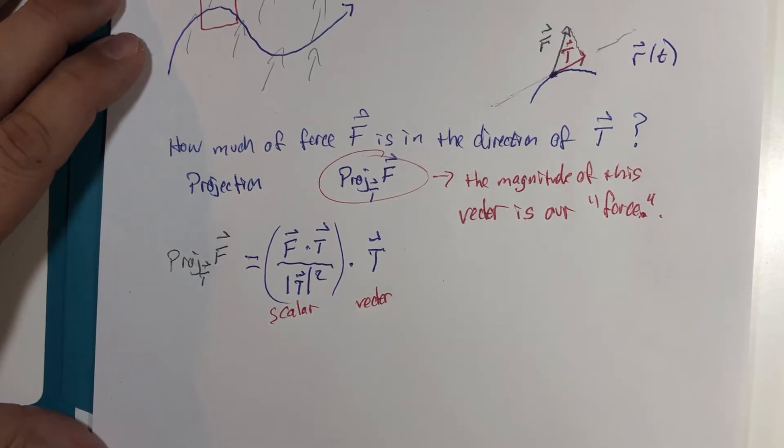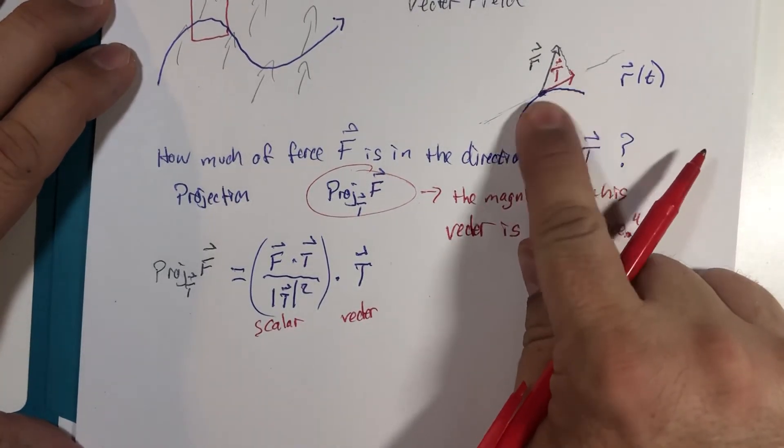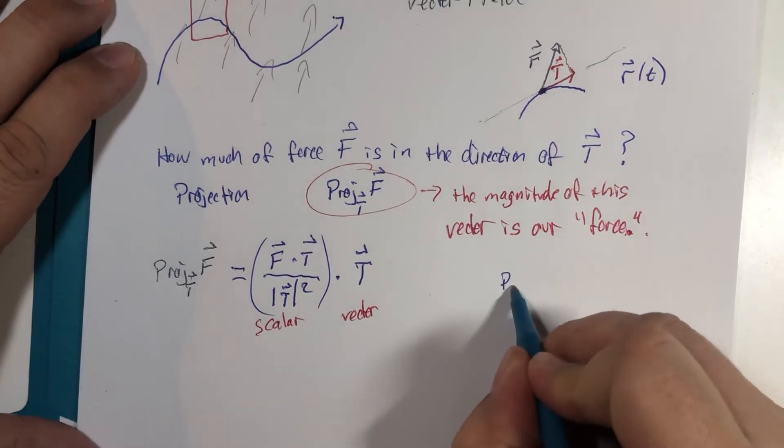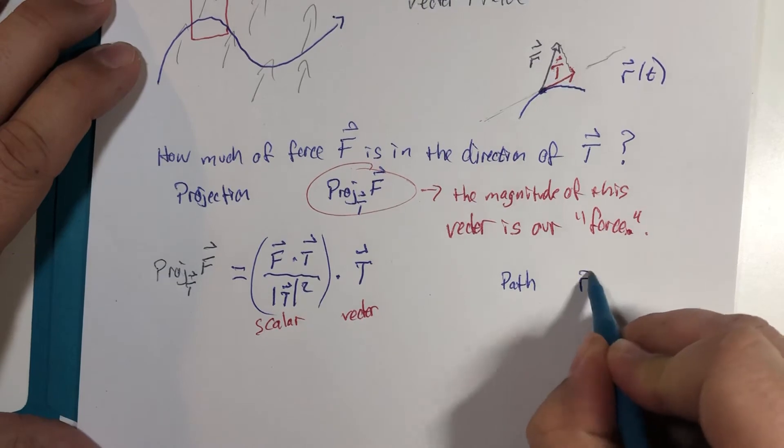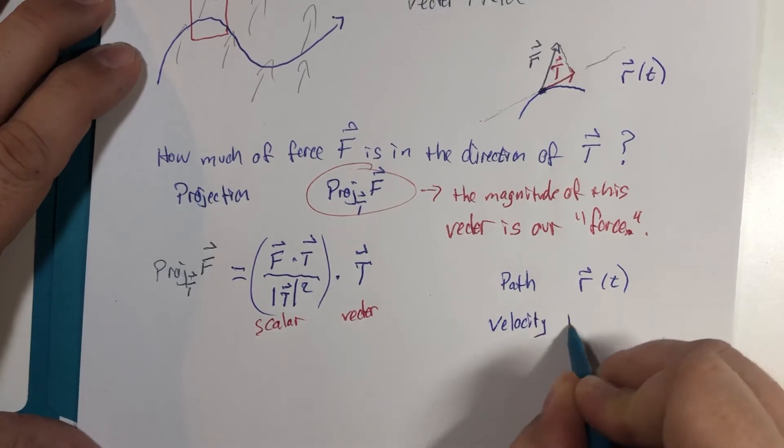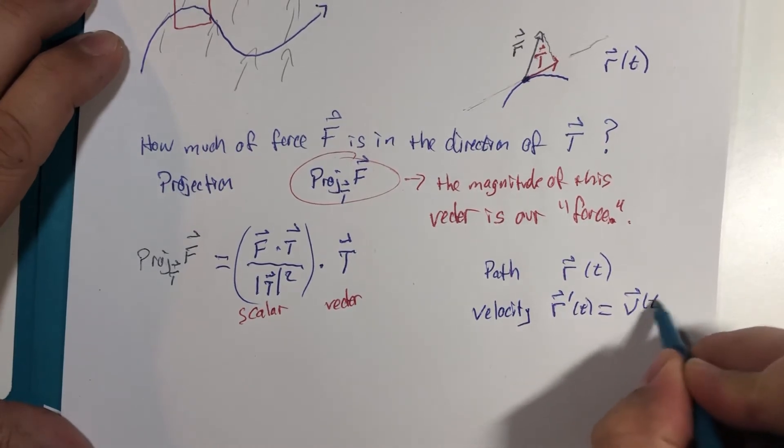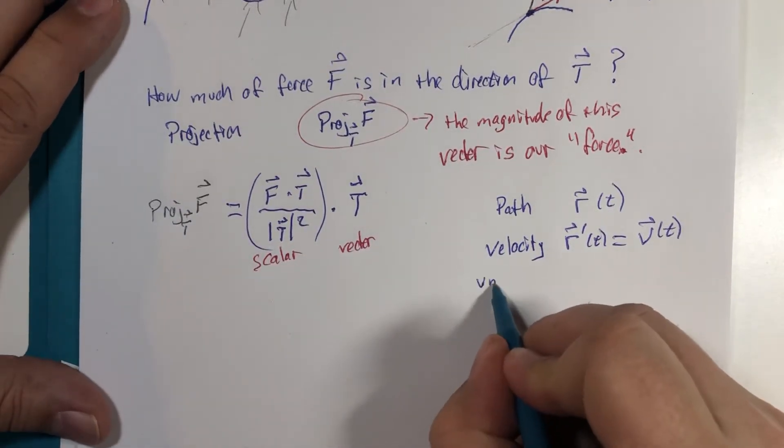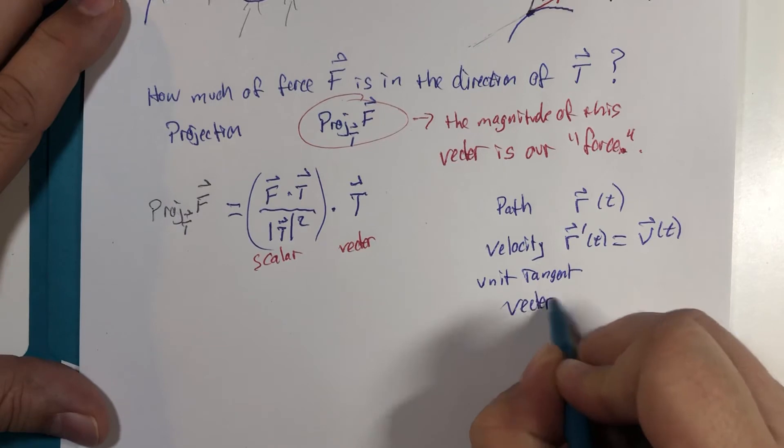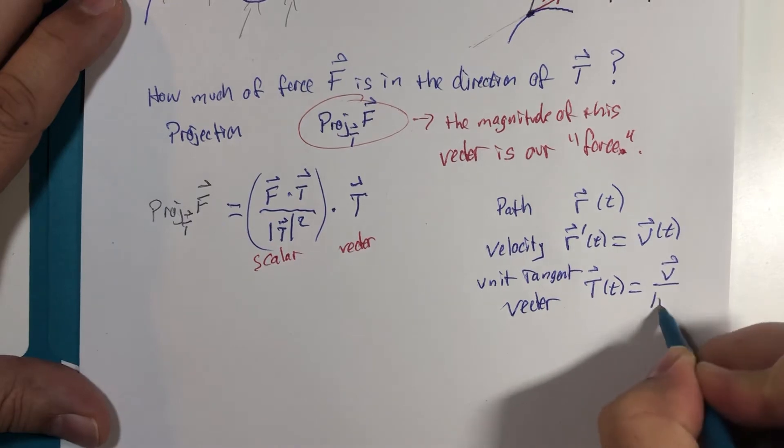The formula for projection of a vector onto another vector, there's several ways of writing it. It's the dot product of the two vectors divided by the magnitude squared of the vector we're projecting onto times the vector. That makes this a scalar, and this is a vector. Now, let me let you in on the secret just in case you missed the notation. This vector I nicknamed T was not done accidentally.